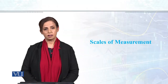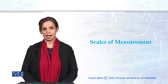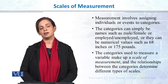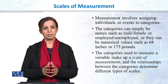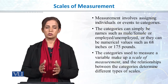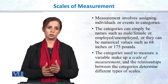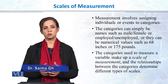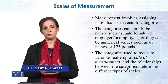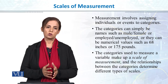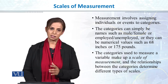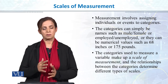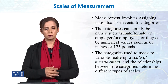We talked about what to measure — we measure variables and there are different types of variables. Now I will talk about scales of measurement. Statistics is a science of numbers; it's about data, it's about numbers. So the language of statistics is numbers. And when you analyze those numbers, you are studying attributes like gender or socio-economic status. But you have to talk to statistics or SPSS in numbers. Measurement involves assigning individuals or events to categories.